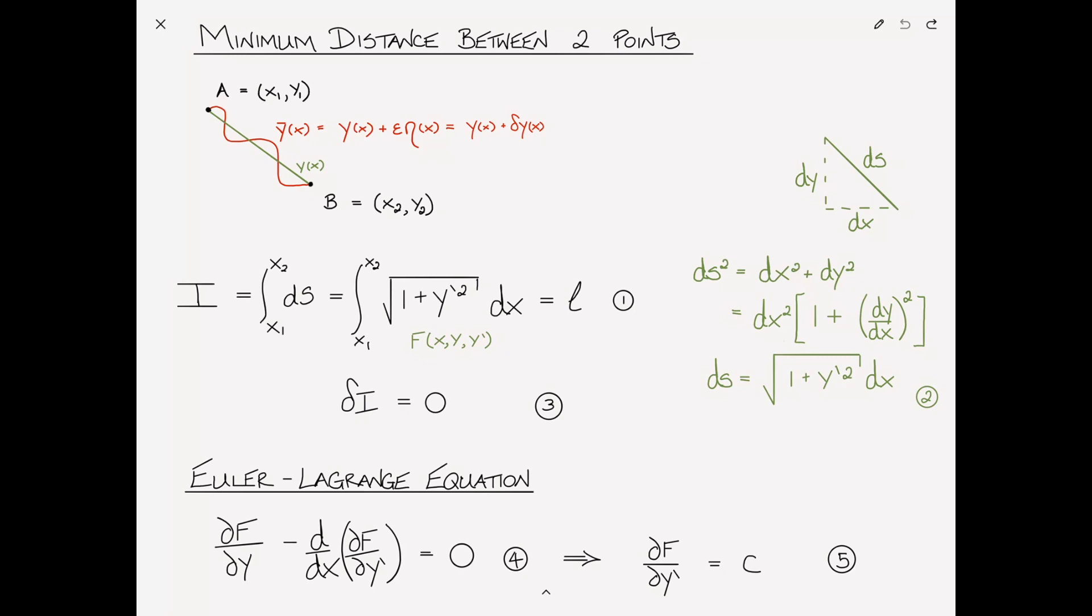given by x1y1 and x2y2, we come up with the integral that depends on the path that we're trying to optimize. In this case the integral is the path length, and what we found previously is that in order for this to be a stationary point, this functional must satisfy the Euler-Lagrange equation.